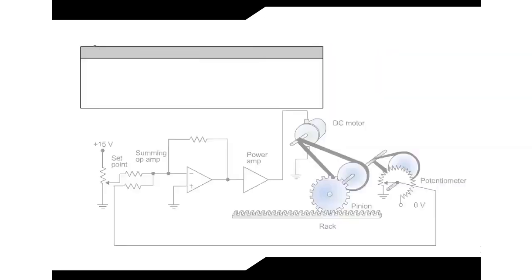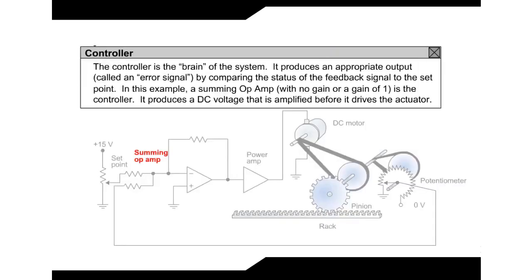Controller: The controller is the brain of the system. It produces an appropriate output by comparing the status of the feedback signal to the set point. In this example, a summing op-amp is the controller. It produces a DC voltage that is amplified before it drives the actuator.